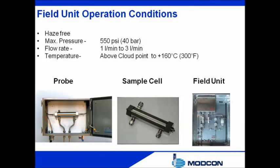The field units are just simple tubes where a side stream of the process flows through. The optical fibers, which transfer the NIR beam from the analyzer to the field unit and return the transmitted beam to the analyzer, are connected to both ends of the measuring probe. The probes are easily disassembled for cleaning. Pre-conditioning of the sample — such as drying, heating, or cooling — may be required to prevent undesired disturbance of the measured signal due to improper sample conditions.